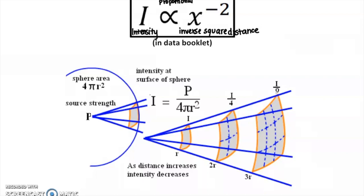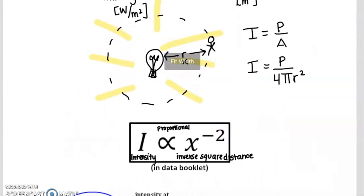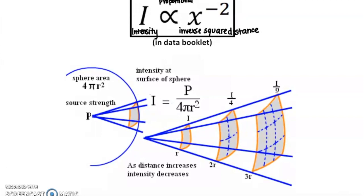Note that in this equation they used x to represent distance, same as the r I was using before. This equation is in your data booklet — it's actually a proportionality, not an equation. The inverse square relationship means that intensity drops off really quickly the farther away you go. For example, if you double your distance away from a source, you will have one fourth of the intensity. Or if you triple your distance, you get one ninth the intensity.